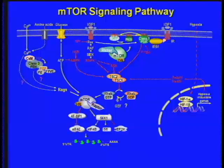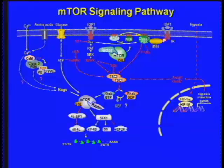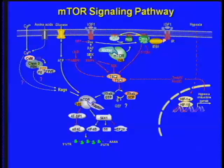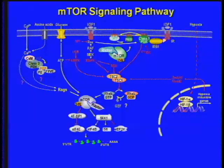Nutrients include branched-chain amino acids and glucose, and we know that they operate through a molecule called VPS34, a class 3 PI3 kinase, which is the ancient PI3 kinase only found in yeast as a single PI3 kinase. And there are novel molecules that David Sabatini's group has defined — the RAGs, which are small GTPases — and I'll be talking about that in a moment.